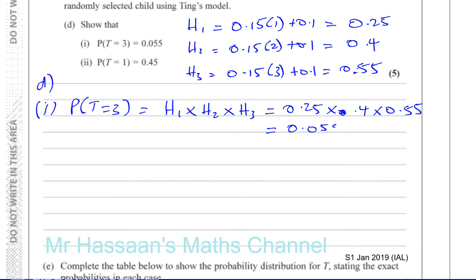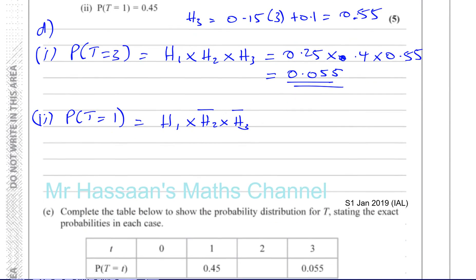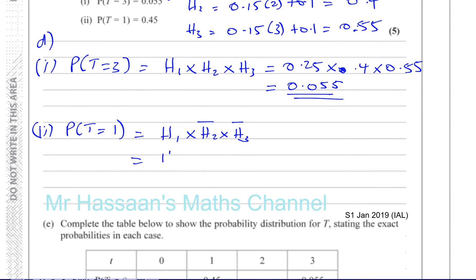Part two asks us to find the probability that T equals one — the person gets the ball in the bucket exactly once. There are three scenarios: hitting on the first throw but missing the second and third; missing the first but hitting on the second throw and missing the third; or missing the first and second but hitting on the third throw.